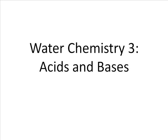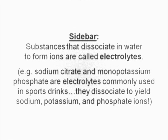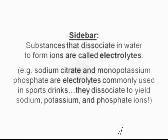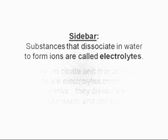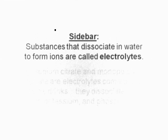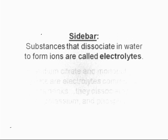This video is going to look at acids and bases. To begin with, I want to go to a slide from an earlier video, focusing on just the top portion of the sidebar that we saw in the ionic bonding video — that substances that dissociate in water to form ions are called electrolytes.